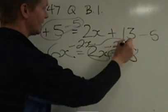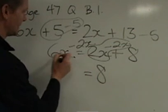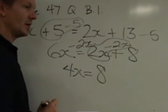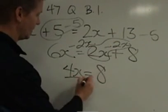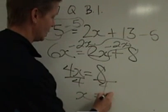2x minus 2x, that's just nothing, so I'm left with 8 on the right-hand side. 6x minus 2x, that's 4x. I have 4x on the left-hand side. I'm just going to divide both sides by 4 to get x all by itself, and x equals 2.